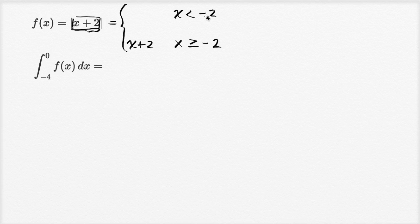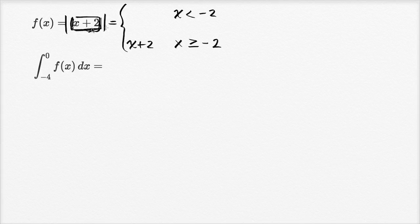What about when x is less than negative two? Well, when x is less than negative two, x plus two is going to be negative, and if you take the absolute value of a negative number, you're going to take the opposite of it. So this is going to be negative x plus two, or equivalently negative x minus two.